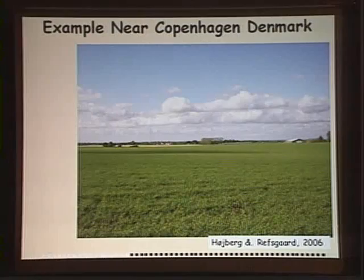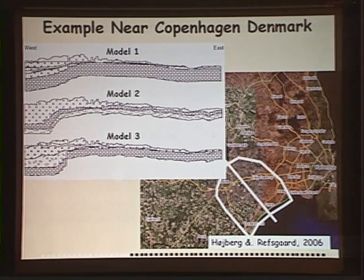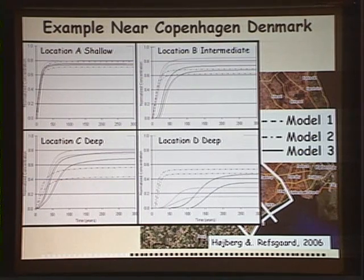If you don't believe this actually happens, I'd like to give you an example from a group working near Copenhagen, Denmark, in a basin southwest of Copenhagen. They have three different geological concepts of how the system is configured. They've taken all three, calibrated them, and made predictions of concentrations for the next 100 or 300 years.